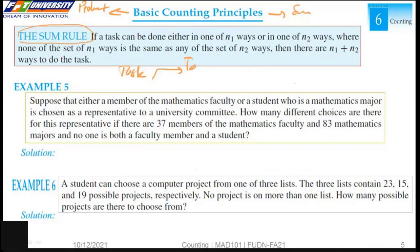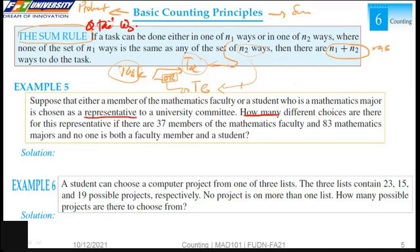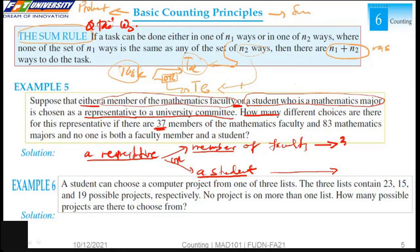This is the sum rule. We can do the task by n1 ways to do task A and n2 ways to do task B. Because this is OR, we have n1 plus n2 ways to do the task. We have to choose a representative to a university committee. We can choose either a member of the mathematics faculty or a student. We have 37 members, 83 students. By the sum rule, we have 120 ways.